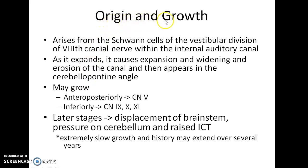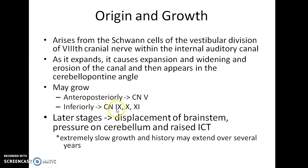Acoustic neuroma arises from the Schwann cells of the vestibular division of the 8th cranial nerve within the internal auditory canal. As the tumour expands, it causes expansion, widening, and erosion of the internal auditory canal, and then appears in the cerebellopontine angle. From here, the tumour may grow posteriorly to involve the 5th cranial nerve, or inferiorly to involve the 9th, 10th, and 11th cranial nerves.